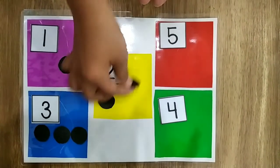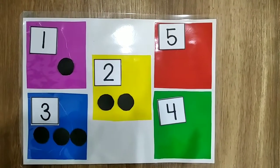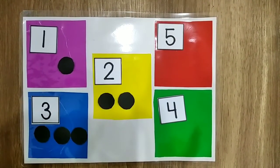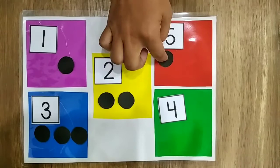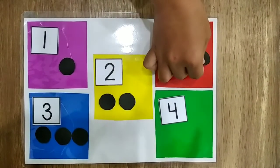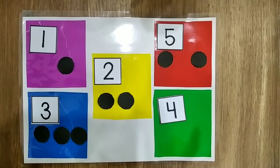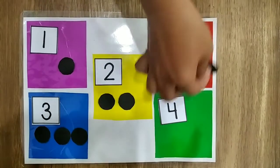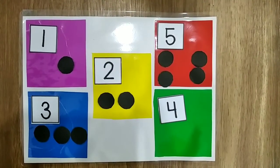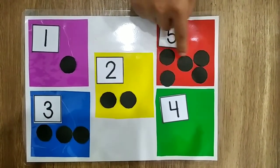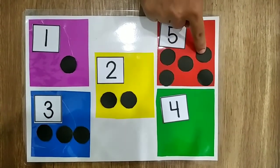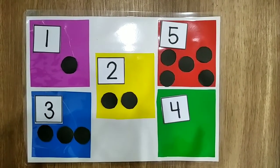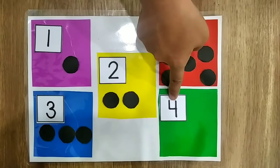One, two. Five. One, two, three, four, five. Now the last one is number four.